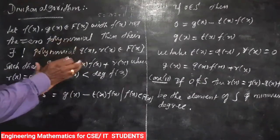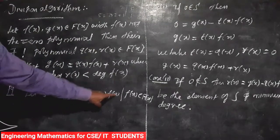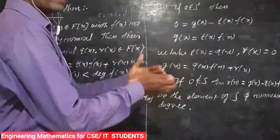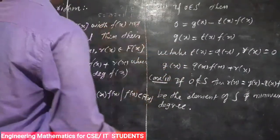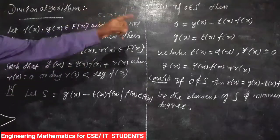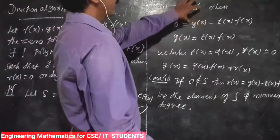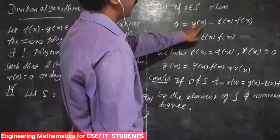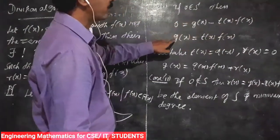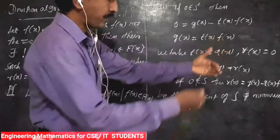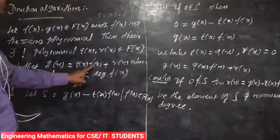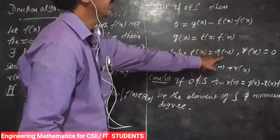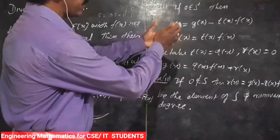To prove this theorem, we proceed in steps. Let S equal the set of polynomials of the form g(x) minus t(x) times f(x), where t(x) belongs to F[x]. First step: we check if 0 belongs to S. If 0 belongs to S, then 0 equals g(x) minus t(x) times f(x), which means g(x) equals t(x) times f(x). So we take t(x) equal to q(x) and r(x) equal to 0.